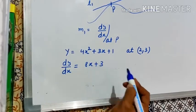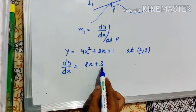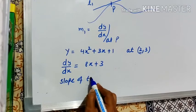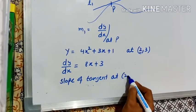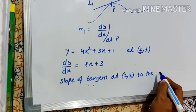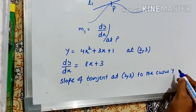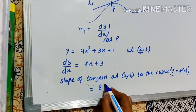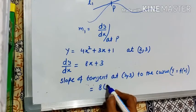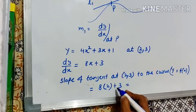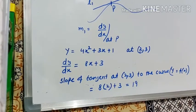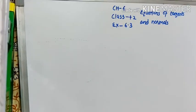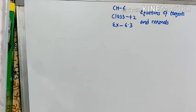For example, suppose we have curve y is equal to 4x square plus 3x plus 1. We have to find slope of tangent at point 2, 3. Then slope of tangent will be: firstly we will find dy by dx, we get 8x plus 3. Now this derivative is in the form of x, so I will fill the x value as 2. So slope of tangent at 2, 3 to the curve is 8 into 2, 16 plus 3, 19. Therefore slope of tangent at the point 2, 3 to the curve is equal to 19.